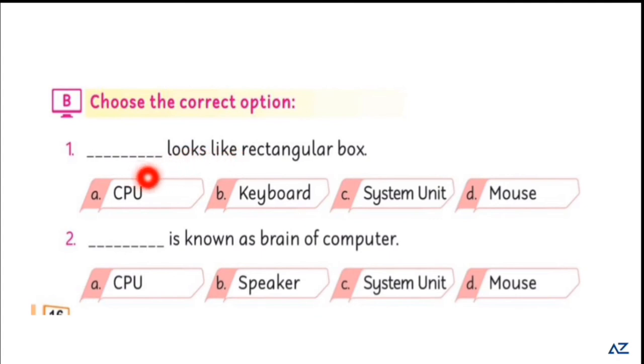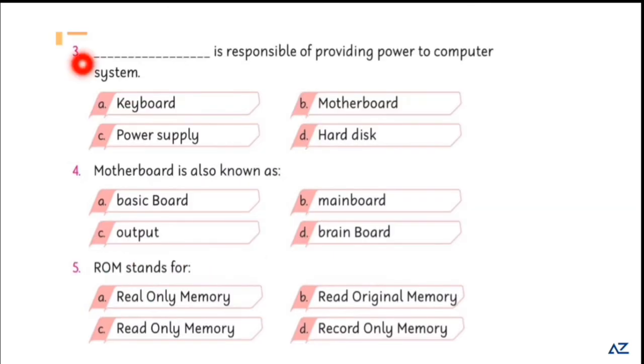System unit looks like a rectangular box. Blank is known as brain of computer. CPU is known as the brain of a computer. Blank is responsible for providing power to computer system. Power supply is responsible for providing power to computer system.